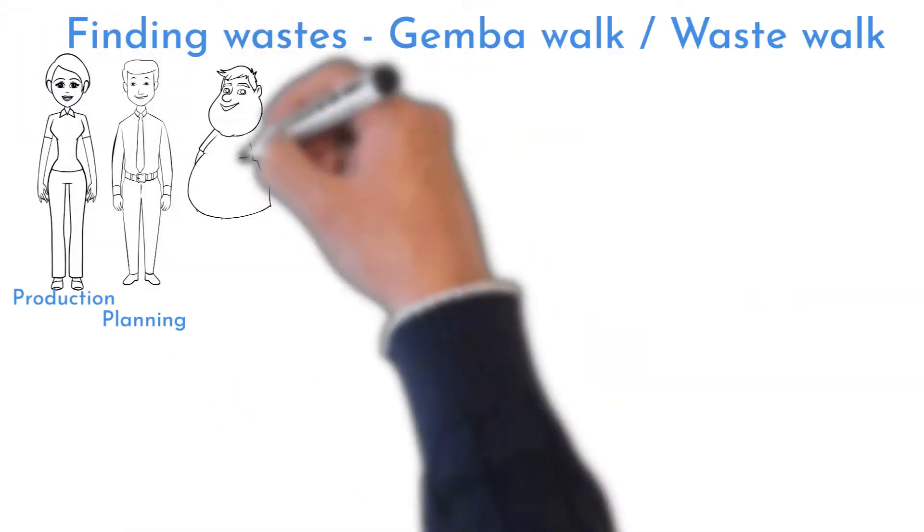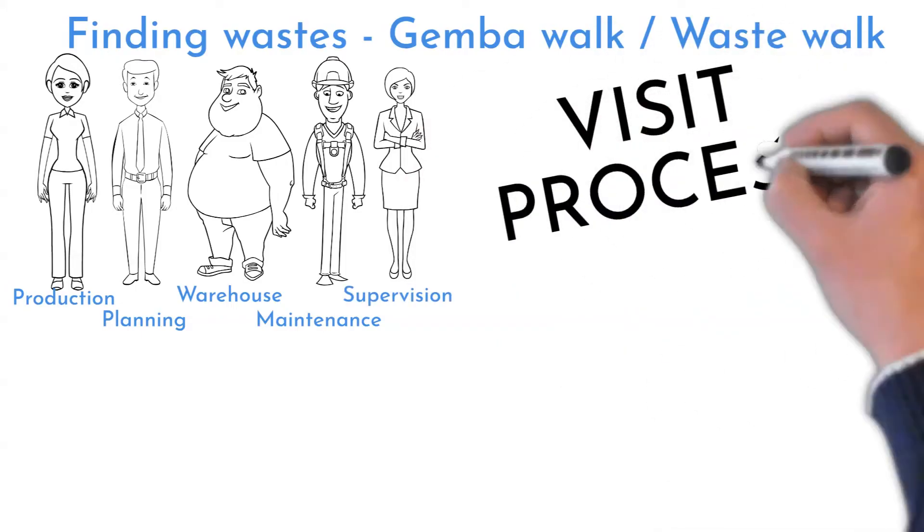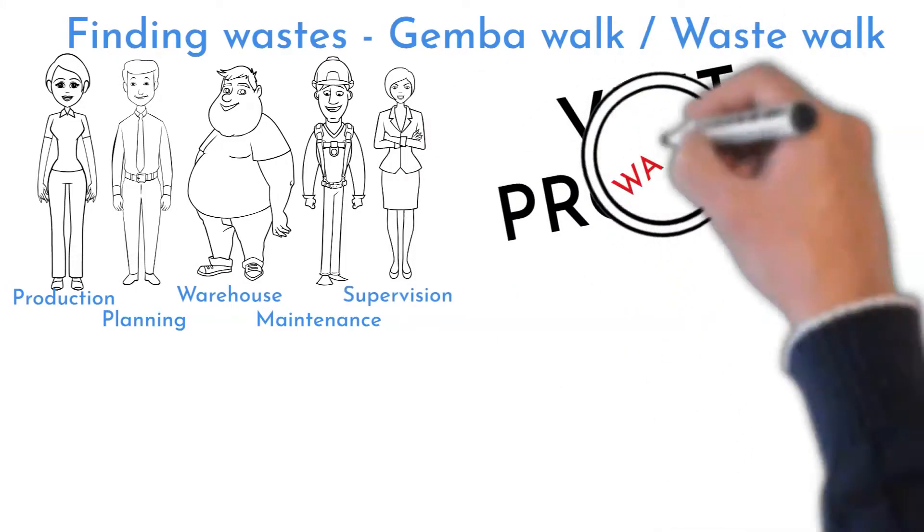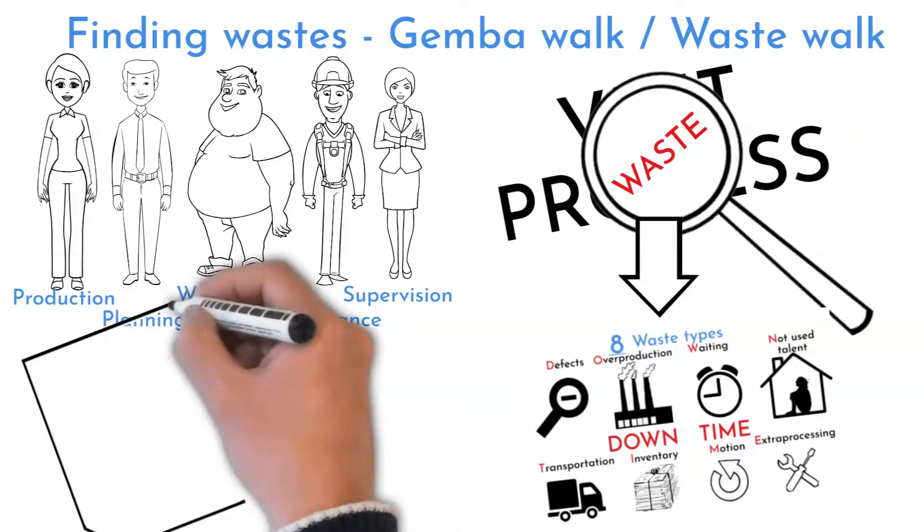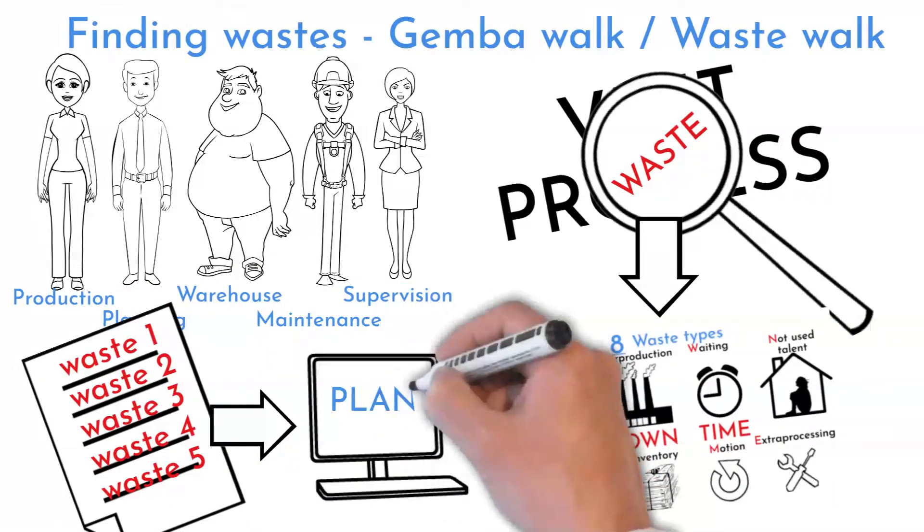To find wastes, create a group of five to six people from different departments. Select and visit problematic process. Observe it and identify wastes based on description. Identify solutions and action items together and create a plan to implement those solutions.